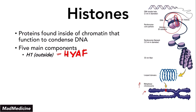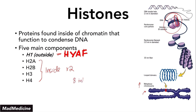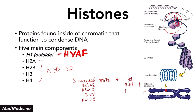This is high yield AF. Then you have H2A, H2B, H3, and H4 — these are all inside. And you have two of these units in the actual histones. So the histones themselves have eight internal units: two H2A, two H2B, two H3, and two H4.